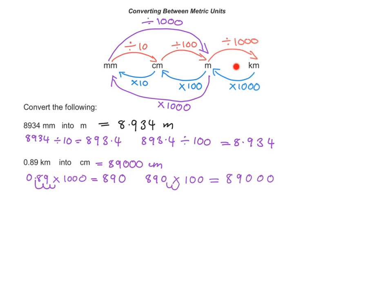Once again, going from kilometres to centimetres, instead of doing this in two steps, we could do it in one step. Multiplying by 1,000 and then by 100 is the same as multiplying by 100,000. So you could multiply directly by 100,000 to get the final answer.